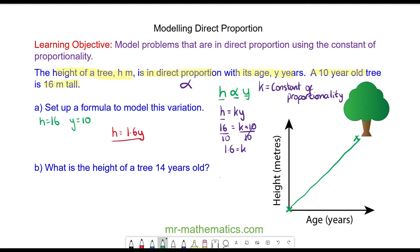We can use this model to calculate the height of a tree when it is 14 years old. The height equals 1.6 times the number of years. The height equals 1.6 times 14. So at 14 years old, the height is 22.4 meters tall.